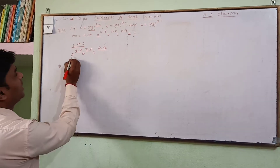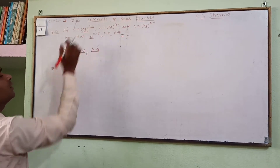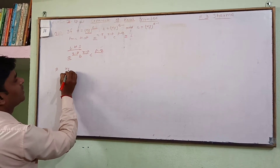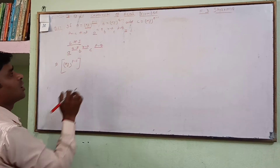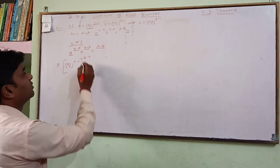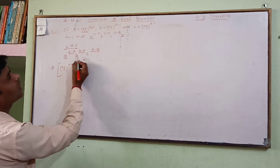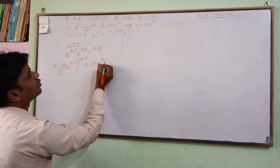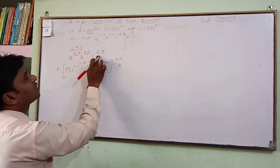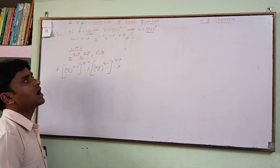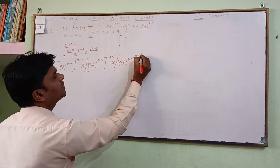Now, the value of A is already given as xy to the power p minus 1. So we put the value of A here: in place of A we write xy to the power p minus 1, raised to q minus r. Similarly, in place of B we write xy to the power q minus 1. And in place of C we write xy to the power r minus 1, raised to p minus q.